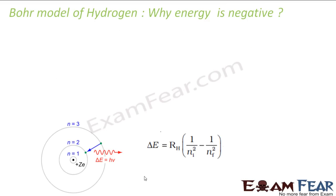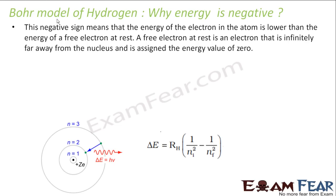Now, the question is: in the Bohr model of hydrogen, energy is negative — why? The negative sign means the energy is lower than the energy of a free electron at rest. This refers to an electron which is not under the influence of any charge — that is, an electron infinitely away from the nucleus.